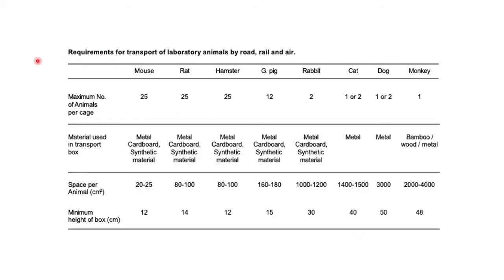Talking about requirements for transport of laboratory animals — by road, rail or air — these requirements vary with the species being transported. The most commonly used animals are mouse, rat, hamsters, guinea pig, rabbit, cat, dog and monkey. The maximum number of animals per cage differs: about 25 for mouse, rat and hamster; a minimum of 12 guinea pigs per cage; 2 rabbits; 1 or 2 cats; 1 or 2 dogs; or 1 monkey.